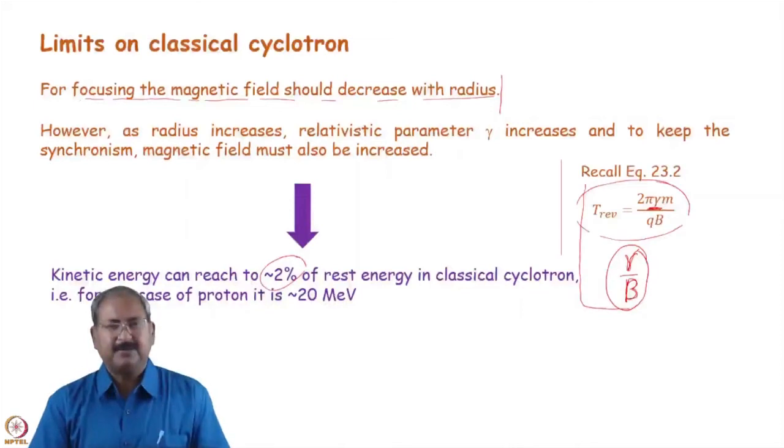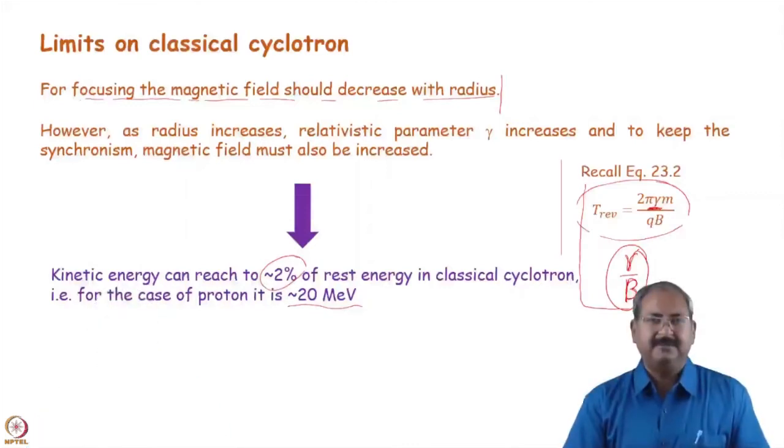So, classical cyclotron cannot reach beyond the 2% of the rest energy of a particle. So, in case of protons, classical cyclotron can reach up to only 20 MeV. However, we have heard that cyclotron can reach up to 800 MeV of protons, 500 MeV protons or even 1 GeV of the protons energy. How is it possible? We see now.